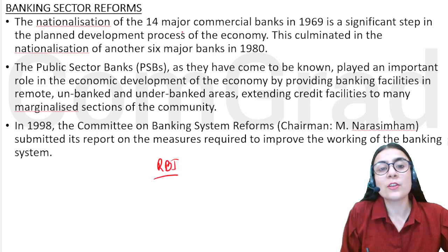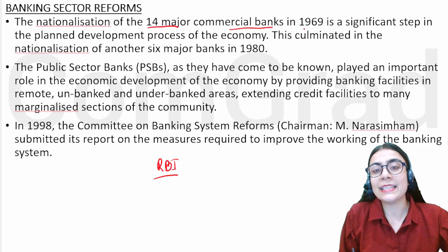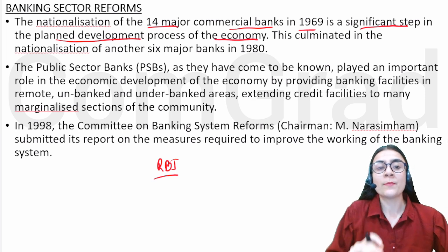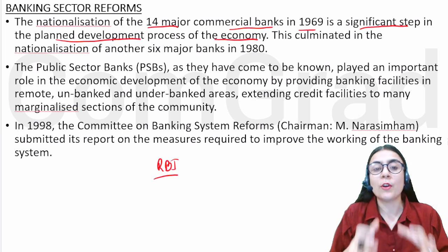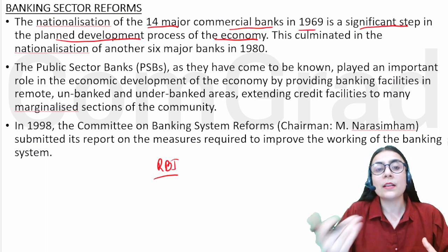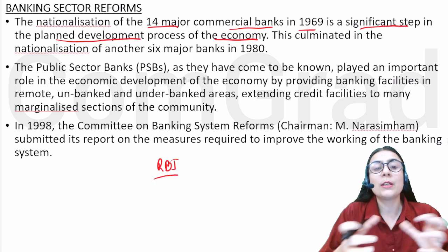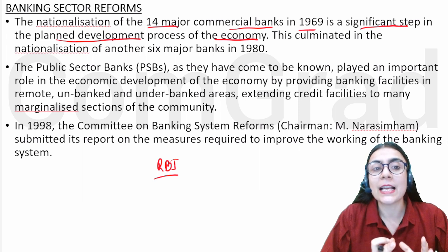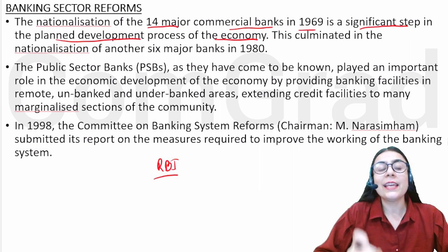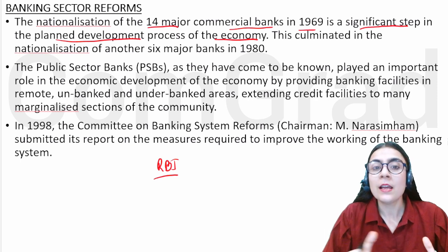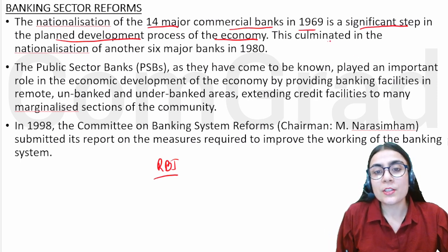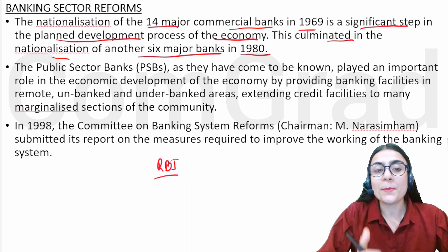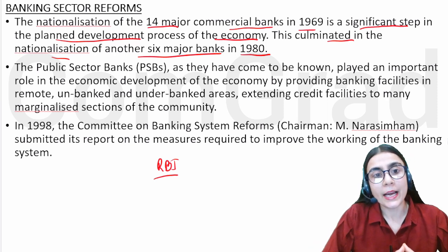We are going to read about the nationalization of 14 major commercial banks in 1969, which is a significant step in the planned development process of the economy. In 1969, 14 commercial banks were nationalized — this was a very important step in economic development. This culminated in the nationalization of another six major banks in 1980, which were also big commercial banks that were nationalized.